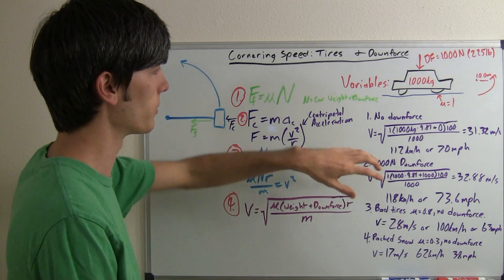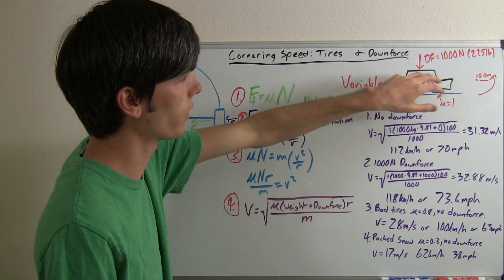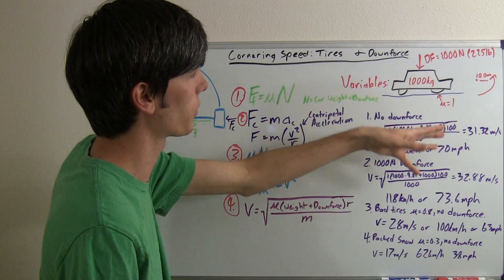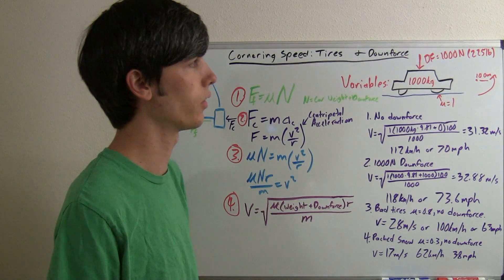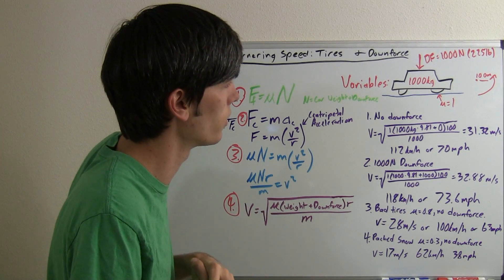So let's just do an example. Now we've got a thousand kilogram car here. And we're going to say that its maximum downforce that it can produce is a thousand newtons. That's about 225 pounds for those who prefer that unit system.